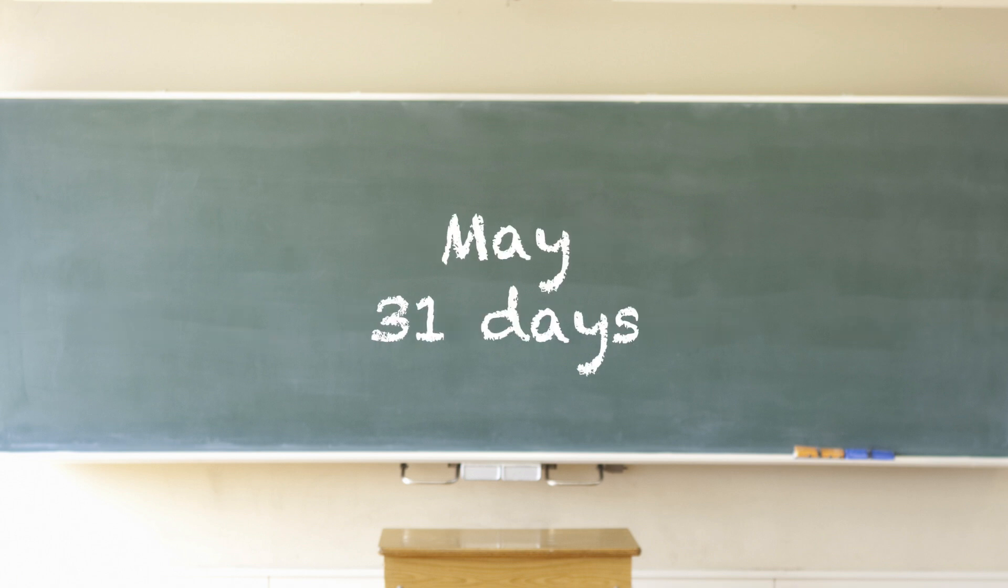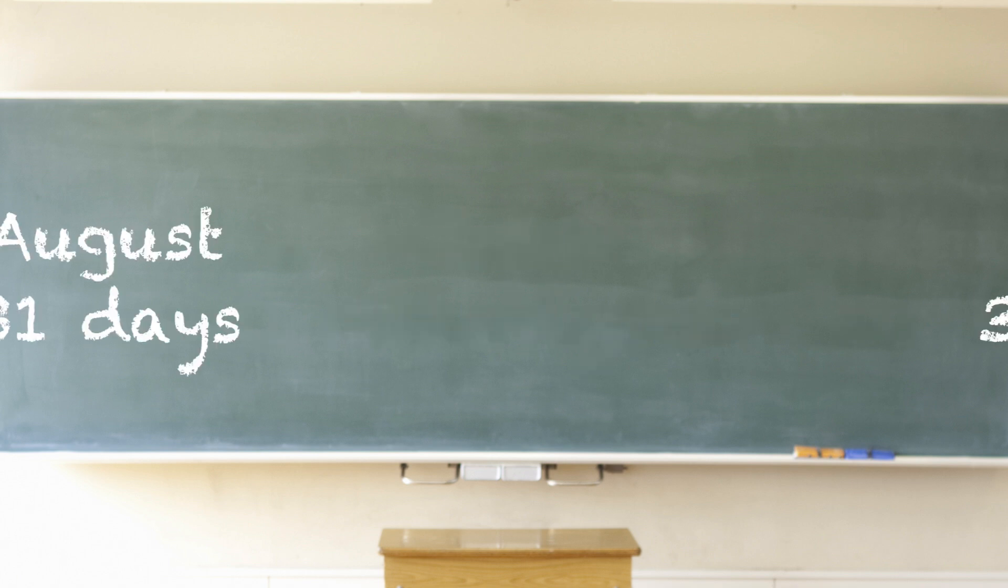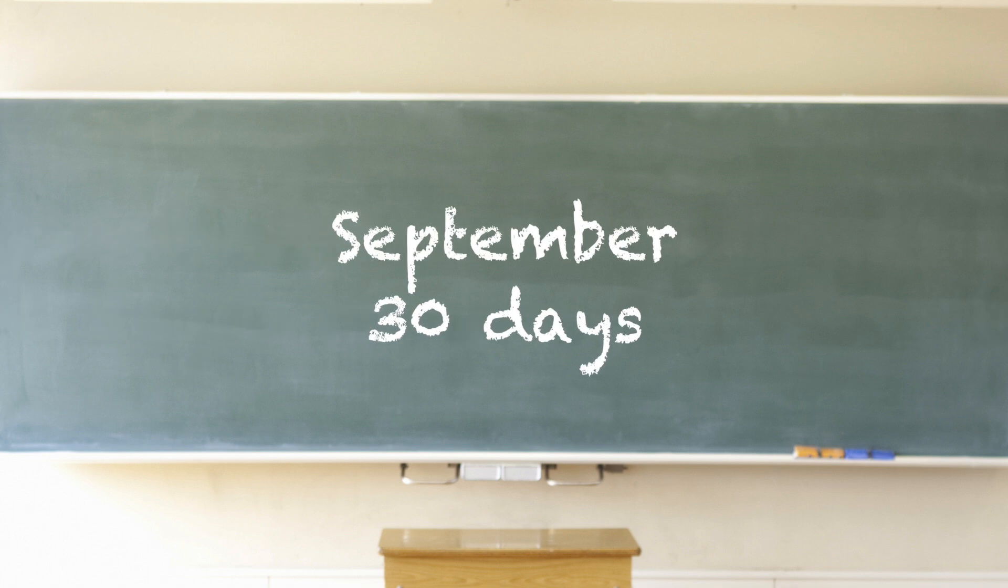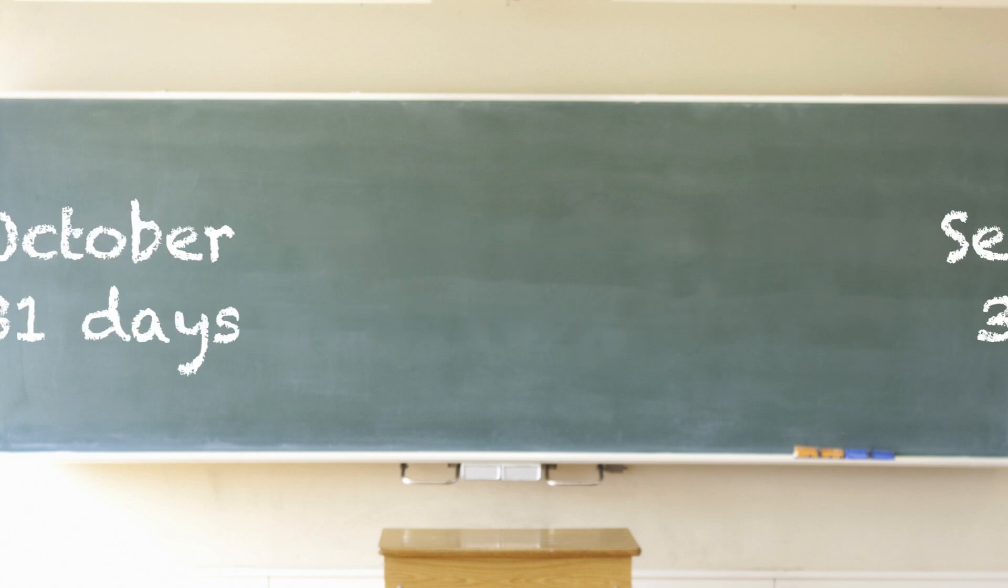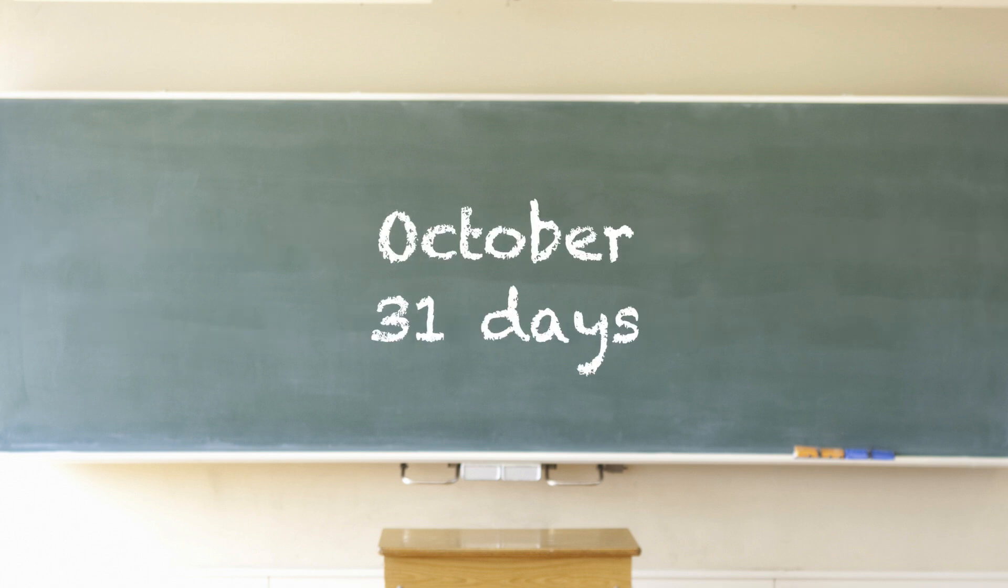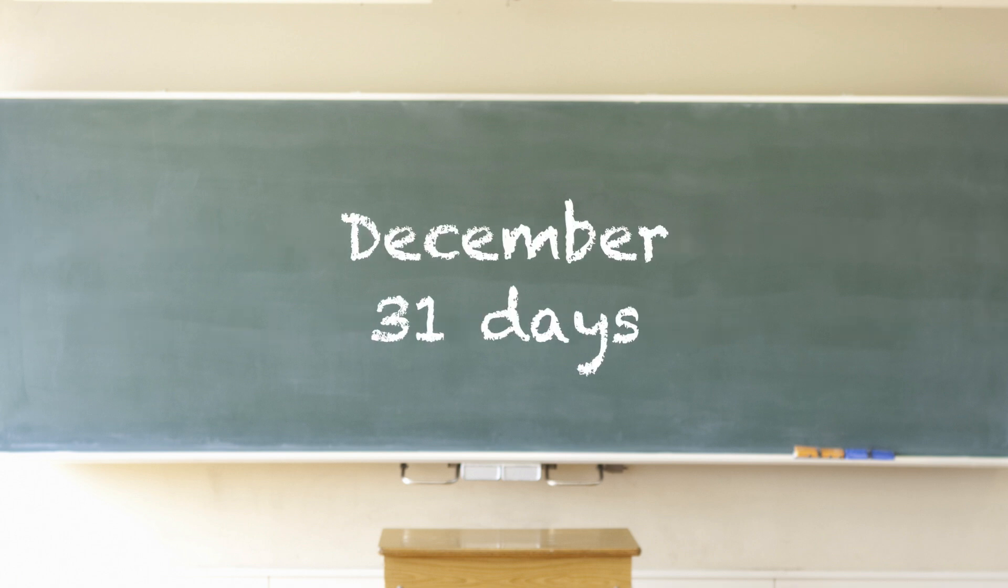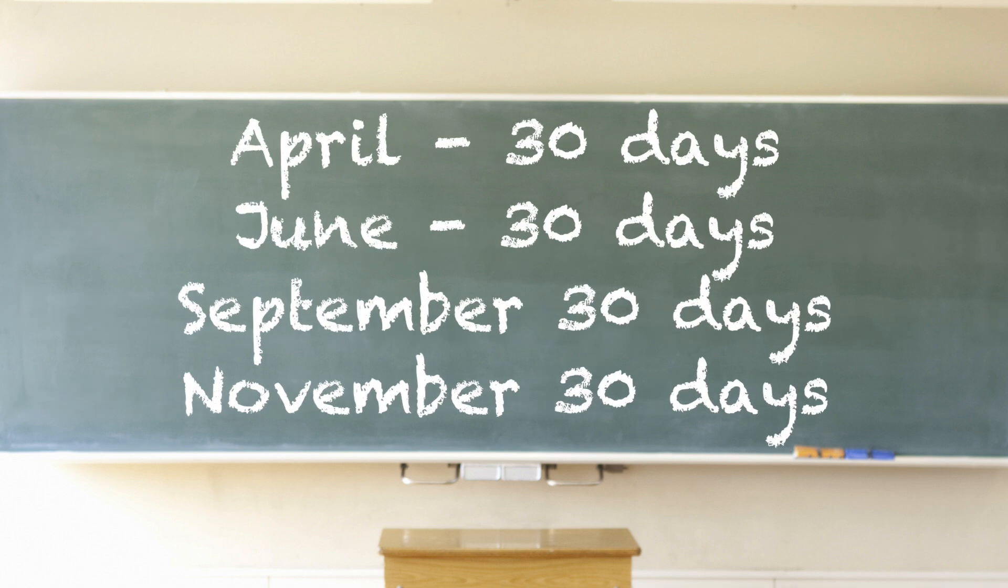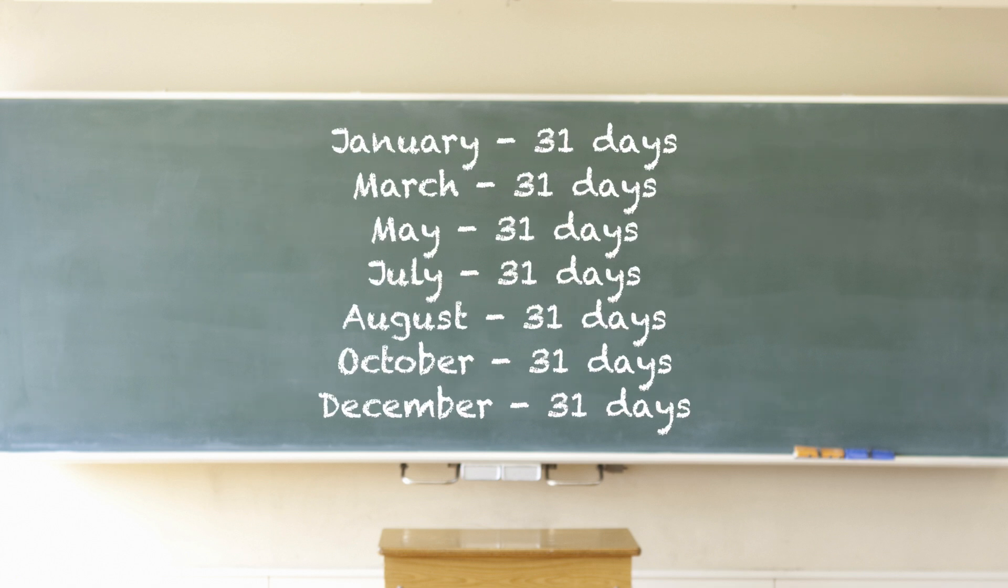May has 31 days, June has 30 days, July has 31 days, August has 31 days, September has 30 days, October 31 days, November 30 days, and December 31 days. There are four months with 30 days and seven months that have 31 days.